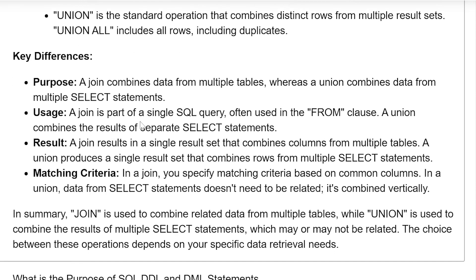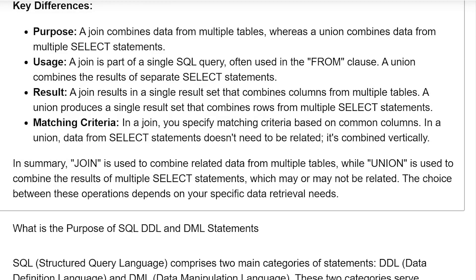Key differences — Purpose: a join combines data from multiple tables, whereas union combines data from multiple SELECT statements. Usage: a join is part of a single SQL query often used in the FROM clause, while union combines the results of separate SELECT statements. Result: a join produces a single result set that combines columns from multiple tables, whereas a union produces a single result set that combines rows from multiple SELECT statements.